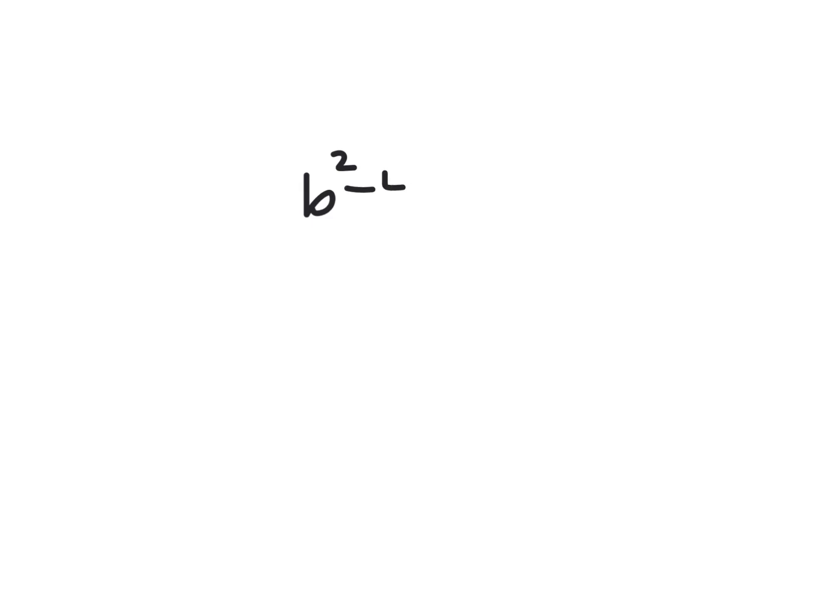Let's start the review process by going back to what we did before all of this quadratic stuff. If you end up with B squared minus 4AC on your test, that'll be called the discriminant. If you get a discriminant that's negative, what does that mean? No solutions.